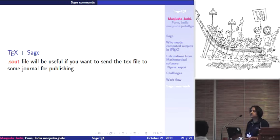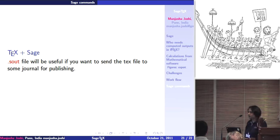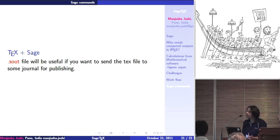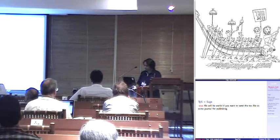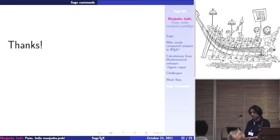The next question that comes to mind is: if we want to give this file to a publisher for a journal, and the publisher may not have Sage installed or doesn't know what to do with it. The idea is that along with your TeX file, you can add the .sout file. Then when the publisher wants to add your paper to its journal, he just needs to compile it once — that's it. So additionally, you just have to include the .sout file.